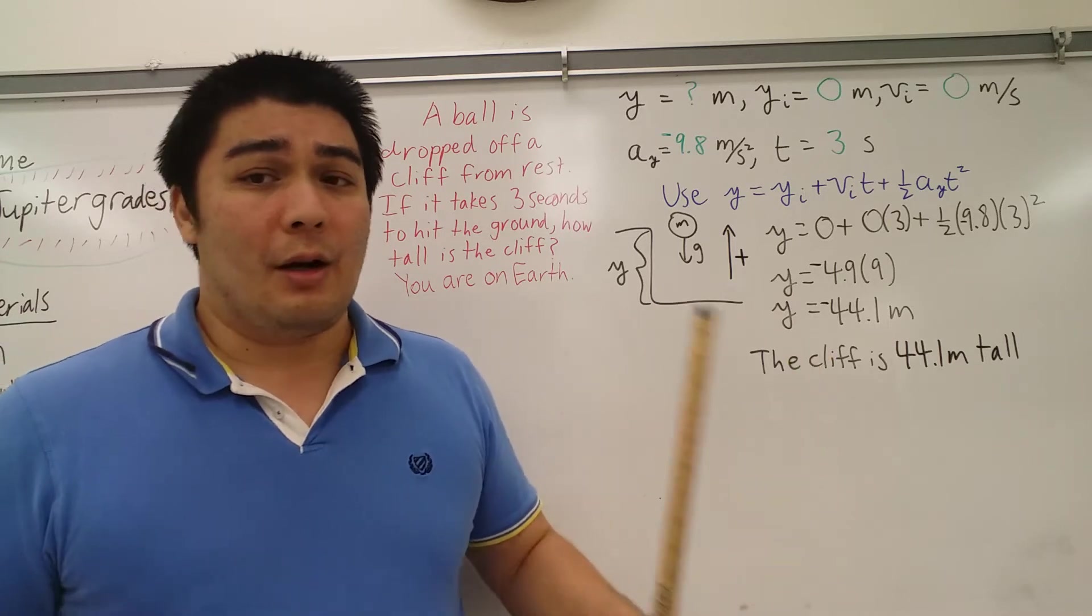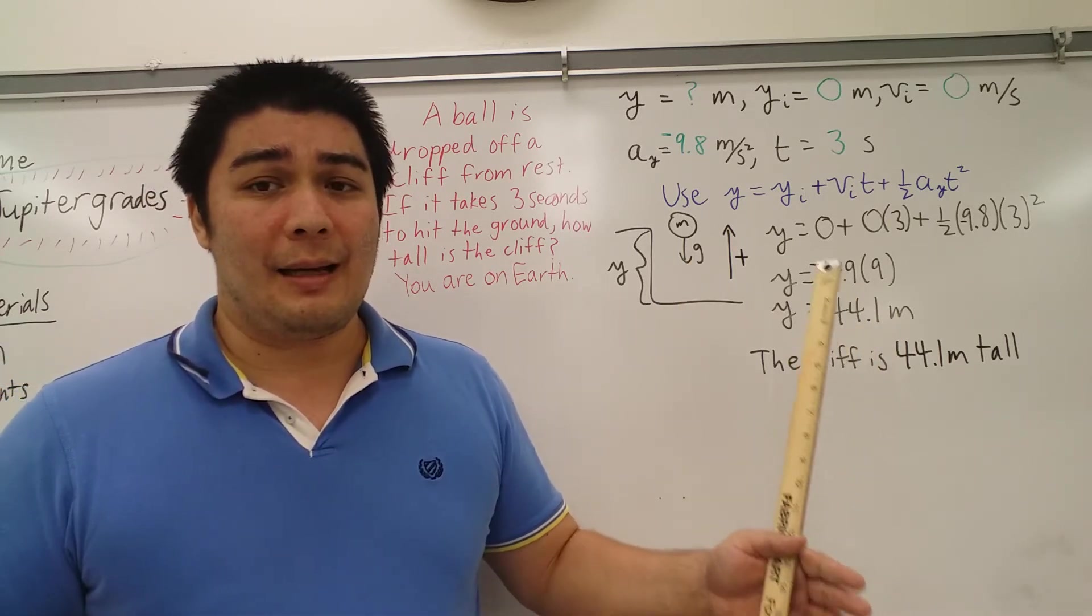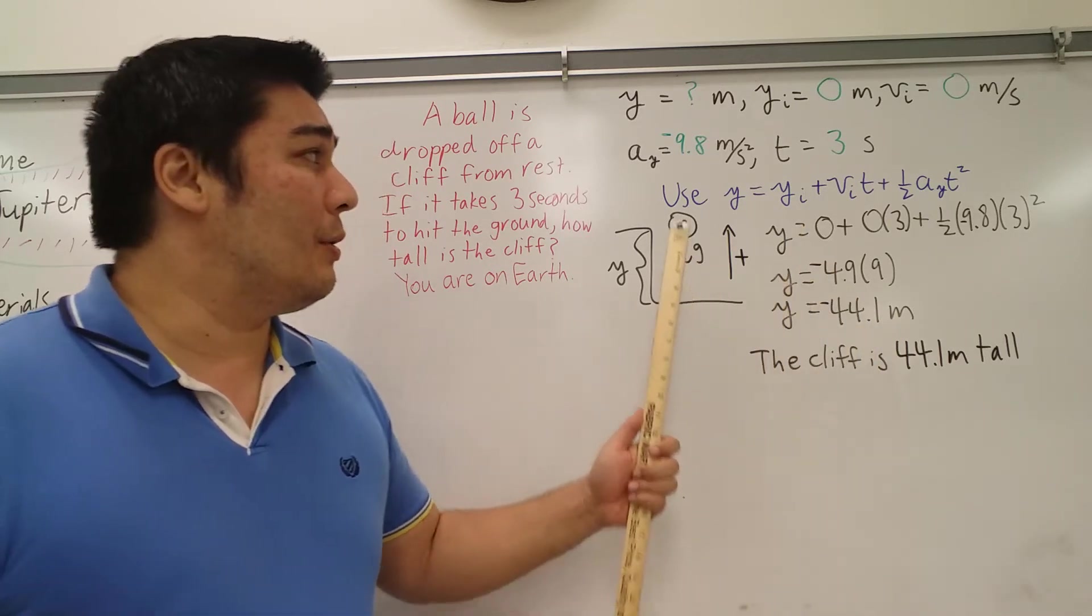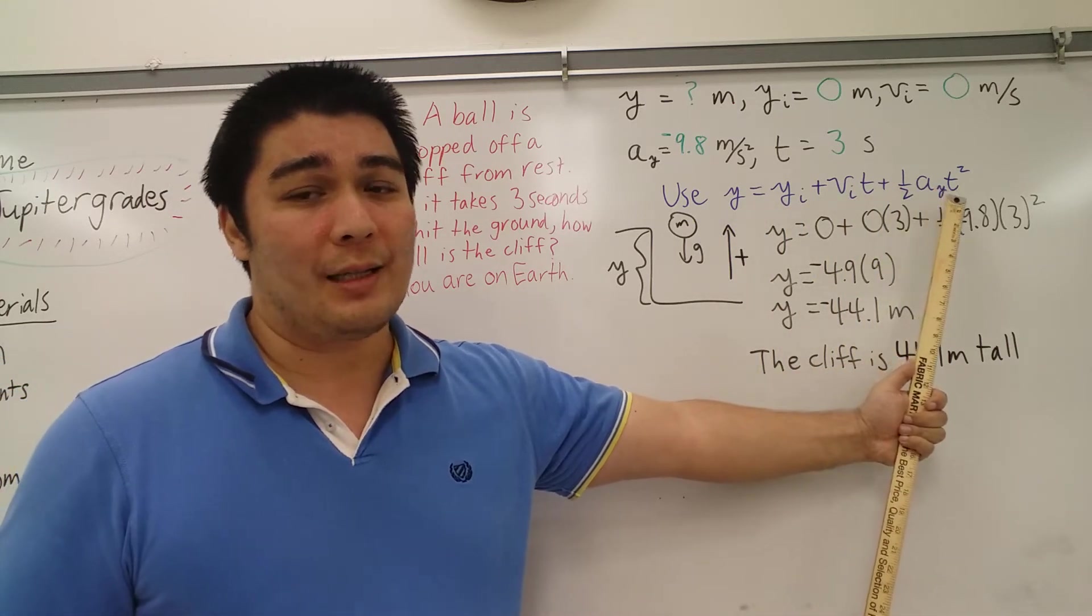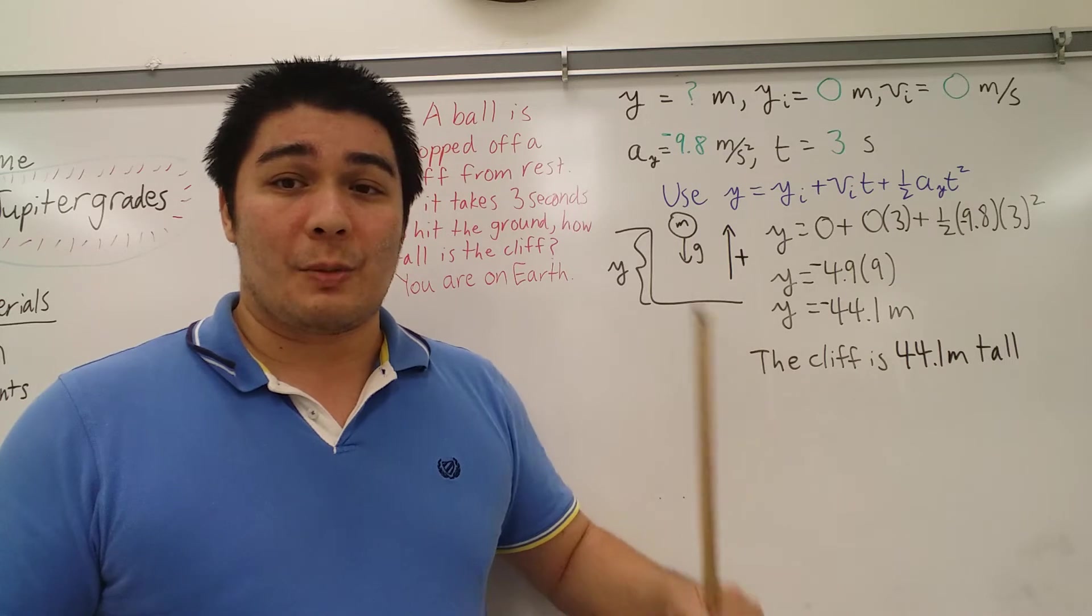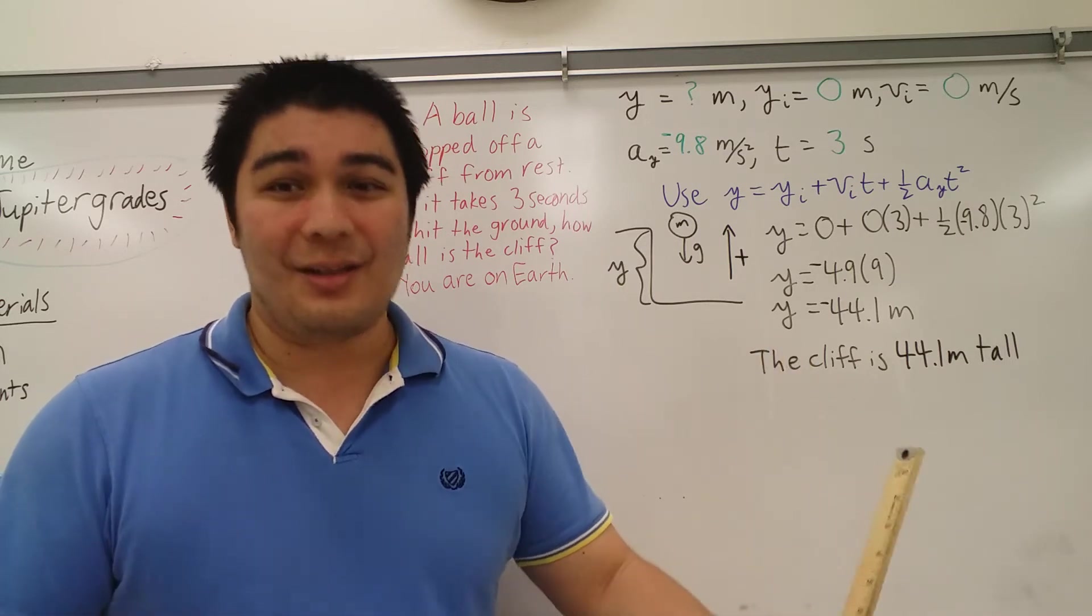So we do the exact same thing. All the numbers are the same as the last video. So all we're going to do is we're going to use y equals y initial plus v initial t plus one half a sub y t squared. And we're going to just plug in our numbers and go from there.